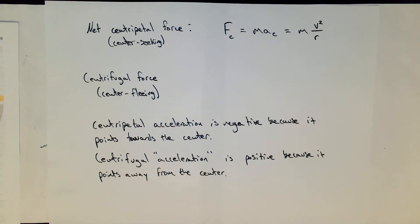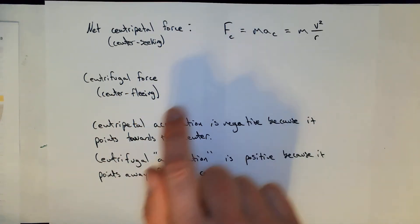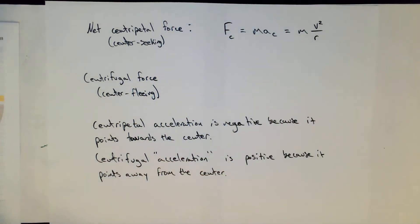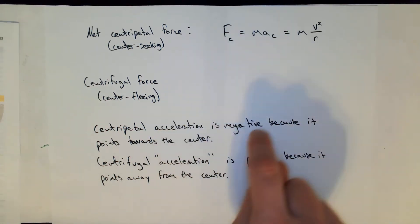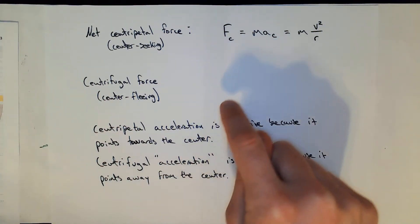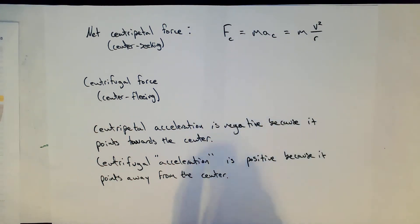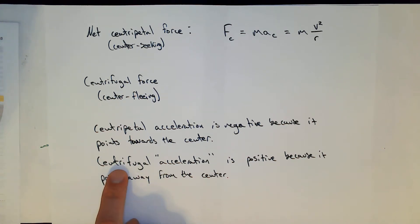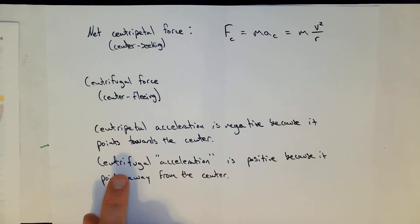The centrifugal acceleration is in quotes because often where you think it exists, it really doesn't. For example, on a merry-go-round spinning fast, you feel pushed outward, and if you let go you might think you'd fly straight out. But we decided that when something spinning in a circle lets go, it goes off tangentially, not straight out. So in many cases the centrifugal force is not actually there — some sources even call it a made-up force.